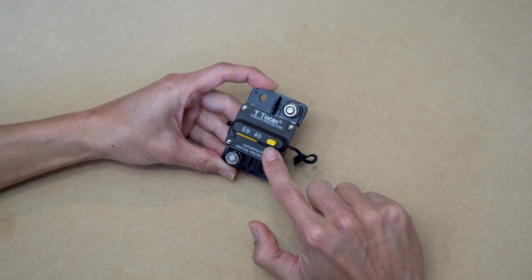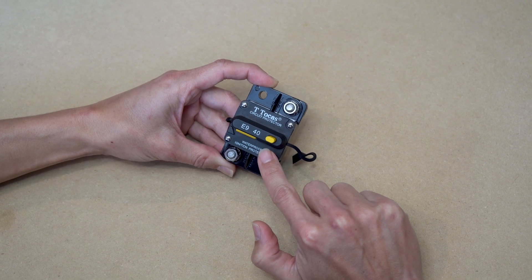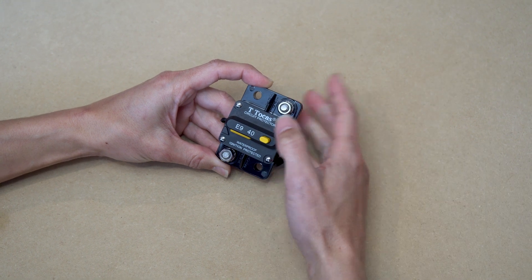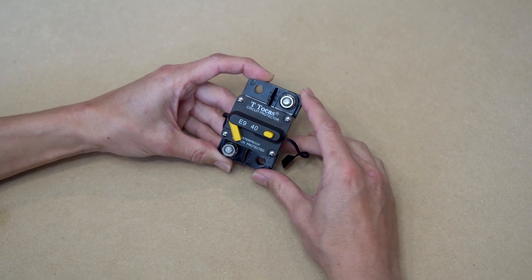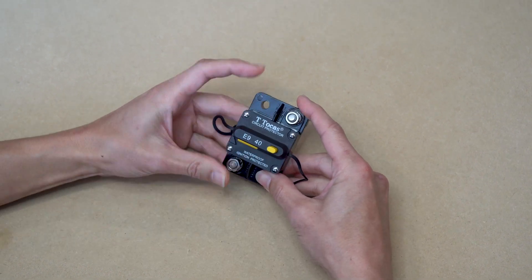This yellow button here is to manually break the circuit, which you can use if you want to conduct routine maintenance or troubleshoot your electrical system. Just push the button and the tab comes out, breaking the circuit. To establish the connection, you simply push the tab back into the slot.